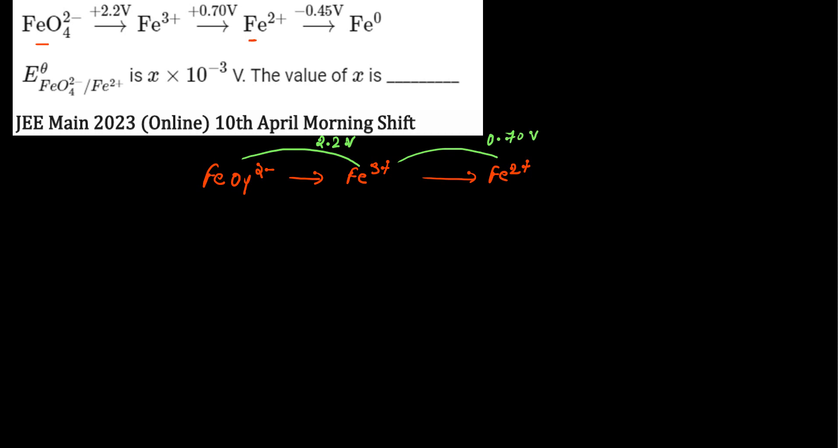Let's check oxidation numbers: in FeO₄²⁻, Fe oxidation number is +6; in Fe³⁺, it's +3; and in Fe²⁺, it's +2. So from +6 to +3, we have a 3-unit change, and from +3 to +2, we have a 1-unit change.